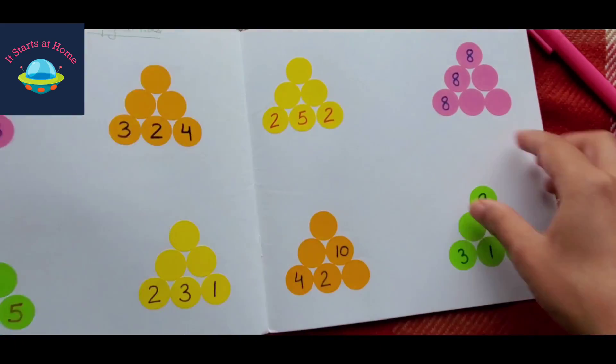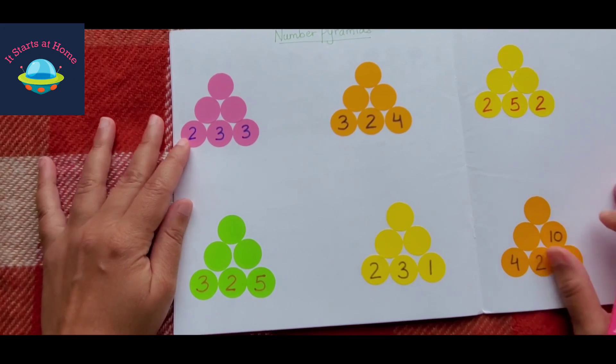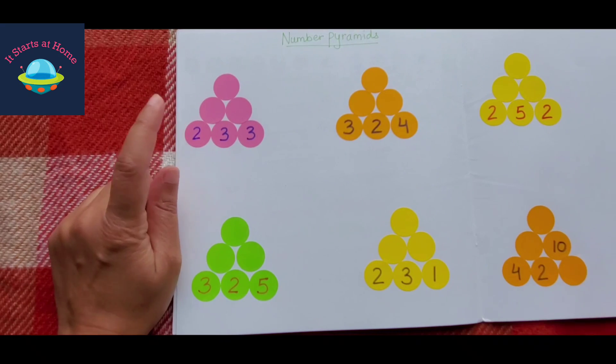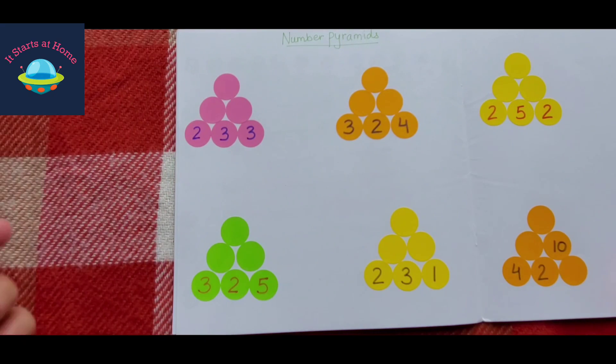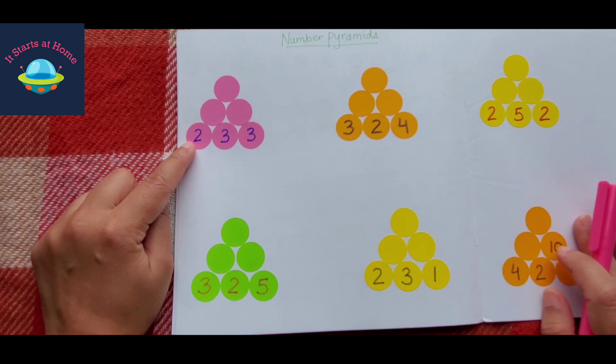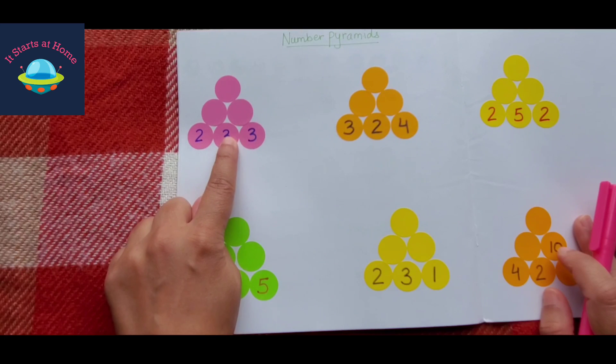This is called number pyramids. I've used dot stickers. You could just randomly make a pyramid with a circle and write numbers. How this works is you have to multiply 2 into 3, you need to write the number here, then you multiply this into this and write the number here, then you multiply this number with this number and the answer goes here.